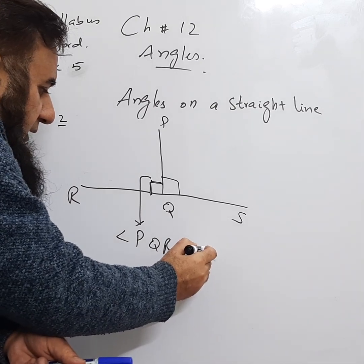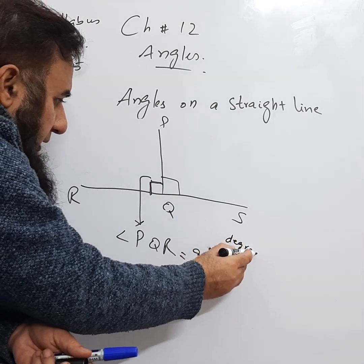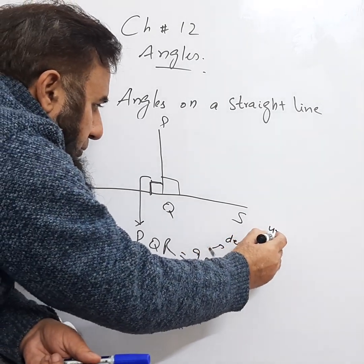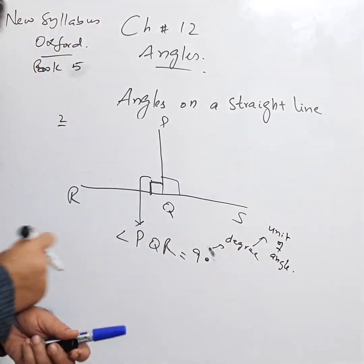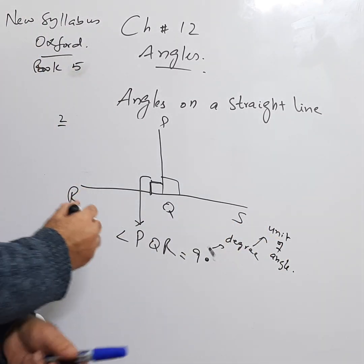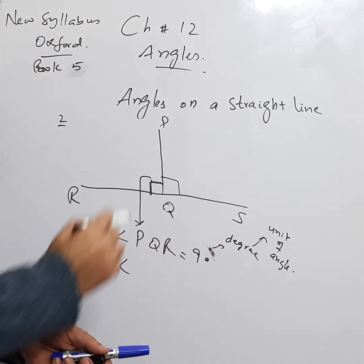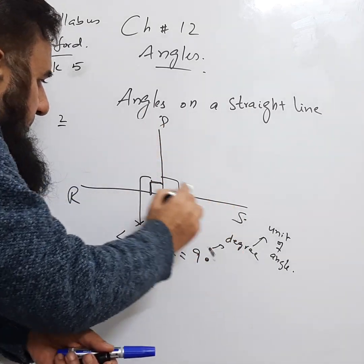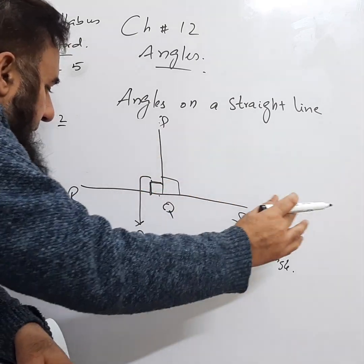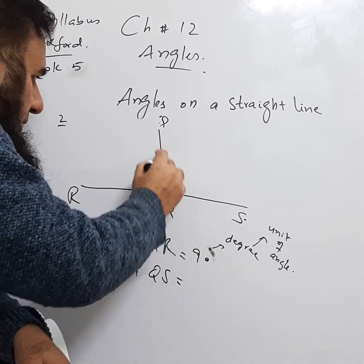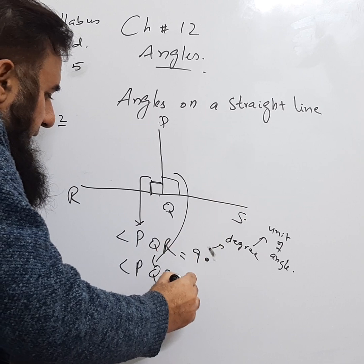This small circle shows degree - degree is the unit of angle. Then what is the other angle PQS? This one, PQS, on the right side. This one is again 90 degrees.